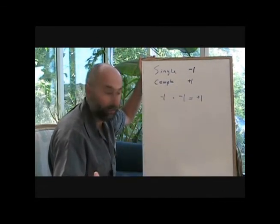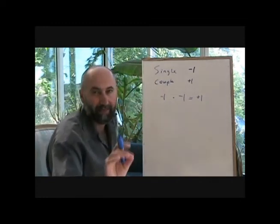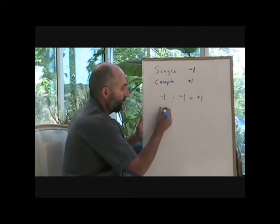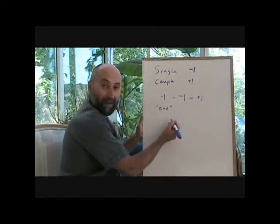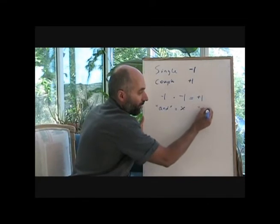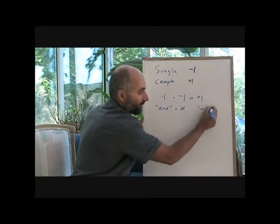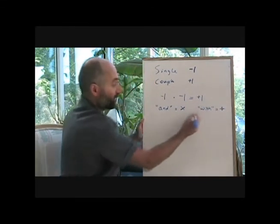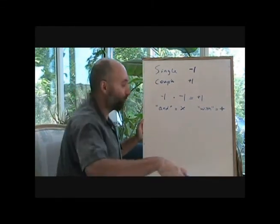Keep in mind that in math, words have meaning. So 'and' in mathematics means multiplication. 'With' in mathematics in general means addition. I'm not sure if you can see this actually, maybe I should make them bigger.